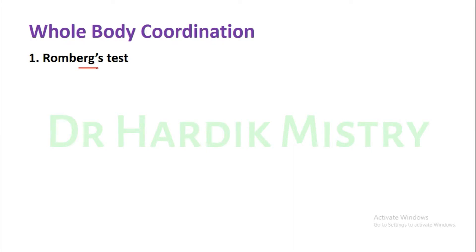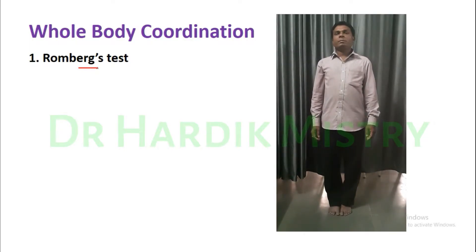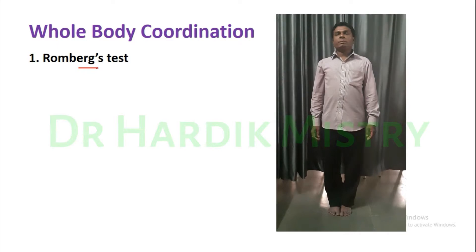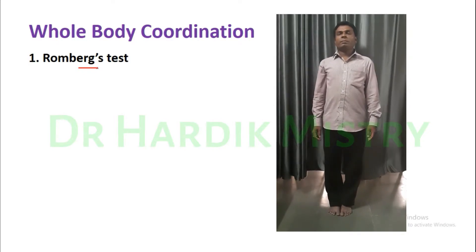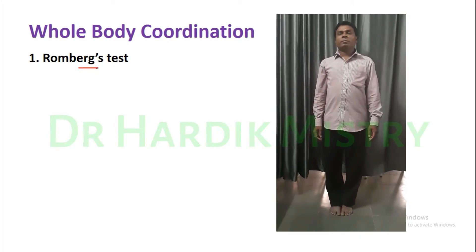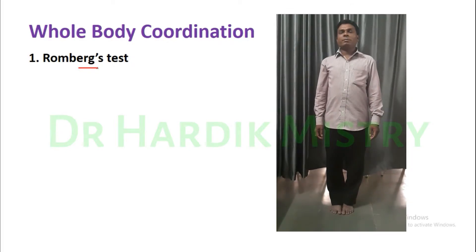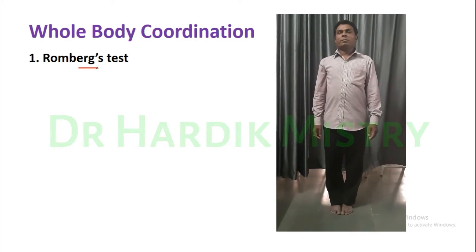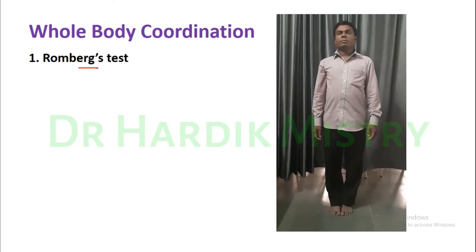Romberg Test. Tell your subject to stand with both feet together with open eyes first, and later closed eyes. You have to note whether the subject stands normally, sways from side to side, or falls down. While they are doing this, try to extend your arm to the side of the subject so that it will prevent injury if he falls down.